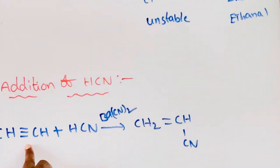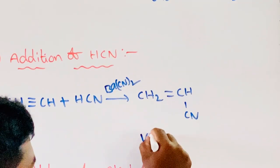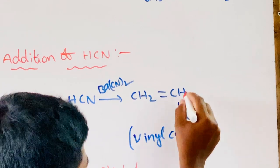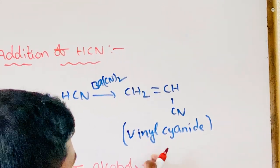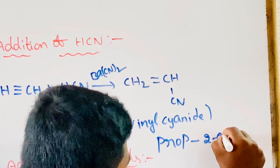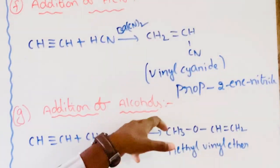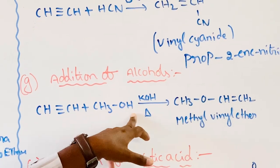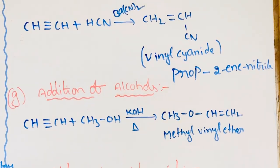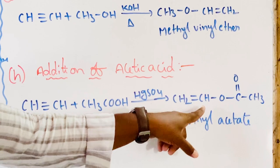Addition of hydrogen cyanide: ethyne reacts with hydrogen cyanide in the presence of barium cyanide to give vinyl cyanide. Vinyl cyanide is the common name; the IUPAC name is propenenitrile. Next, addition of alcohols: ethyne reacts with methyl alcohol in the presence of potassium hydroxide on heating to give methyl vinyl ether. Next, addition of acetic acid: ethyne reacts with acetic acid in the presence of mercuric sulphate to give vinyl acetate.